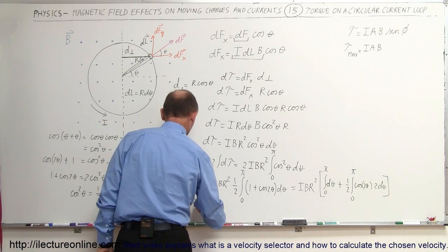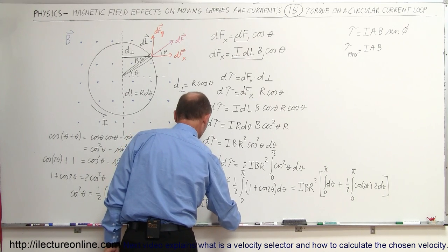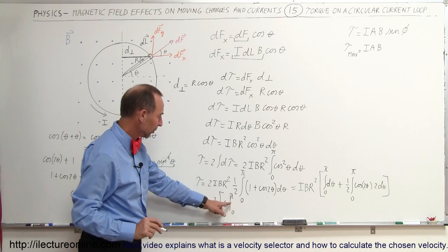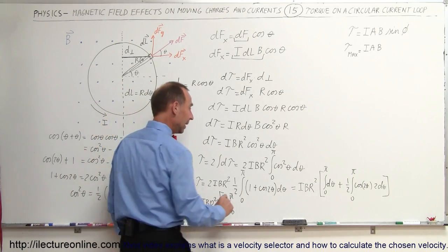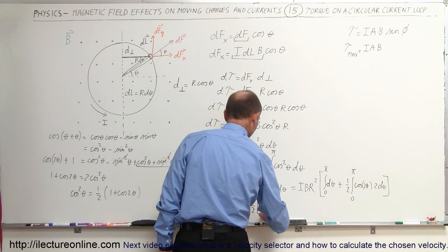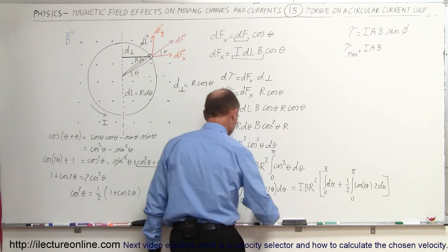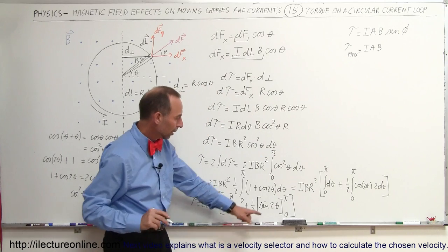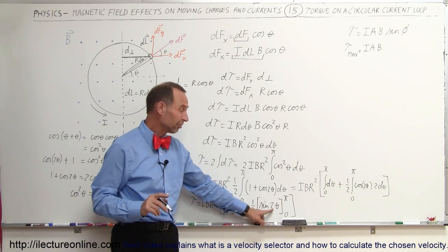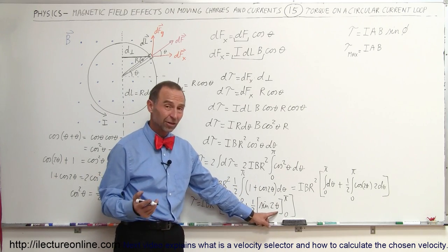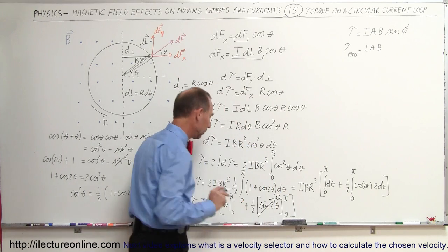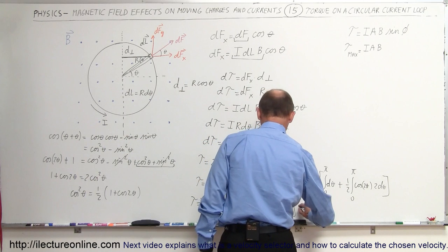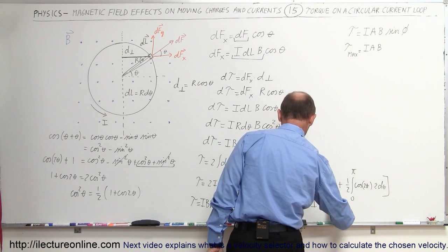Integrating, the torque equals IBr² times: theta evaluated from 0 to π gives π minus 0, which is π; plus ½ times the sine of 2θ evaluated from 0 to π. When we plug in the upper limit, sine(2π) = 0, and the sine of 0 is also 0, so that whole portion equals 0. Therefore, the torque equals IBr² times π.